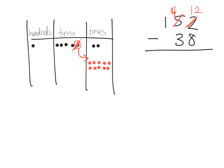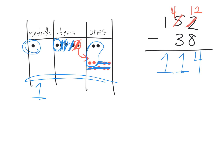Now we have 12 ones, so let's take away 8. I'm going to cross off 8 of them — 5 right here and 3 more. We now have 4 ones left over. Now looking at the tens place, we have 4 tens and we're supposed to take away 3. That's easy: take away 3, and we have 1 ten left. Lastly, we have 100 and take away nothing, so we end up with that 100. Our answer is 114 — 1 dot in the hundreds, 1 dot in the tens, 4 dots in the ones.